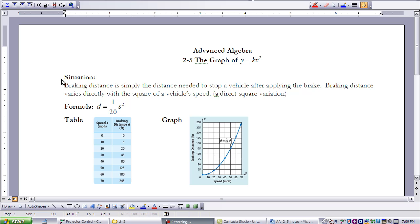Braking distance is simply the distance needed to stop a vehicle after applying the brake. Braking distance varies directly with the square of a vehicle's speed. So here's a situation that is a direct squared variation.